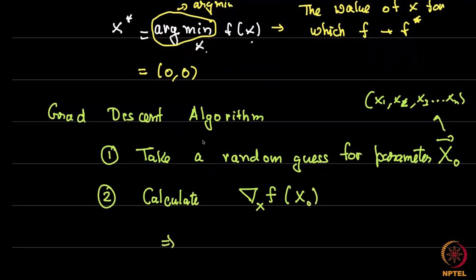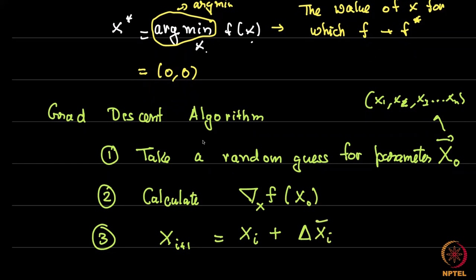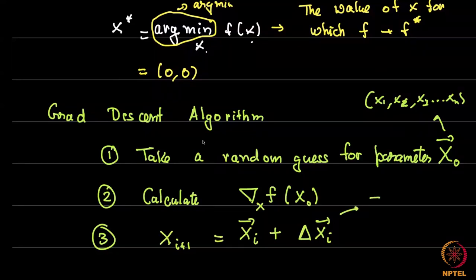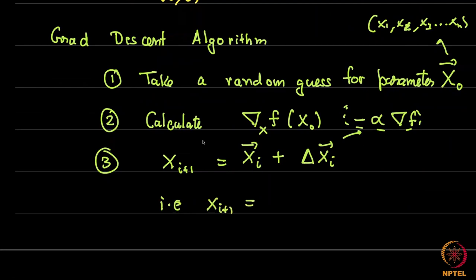Calculate: at this step, compute the gradient of the function with respect to x at this value — let us call this x0, meaning at the very first guess. The third step is to improve: the new x is x plus some delta x, where delta x has both a direction and a magnitude. This delta x should be parallel to minus the gradient of f. So the update is: x_{i+1} = x_i − α · grad f at step i.